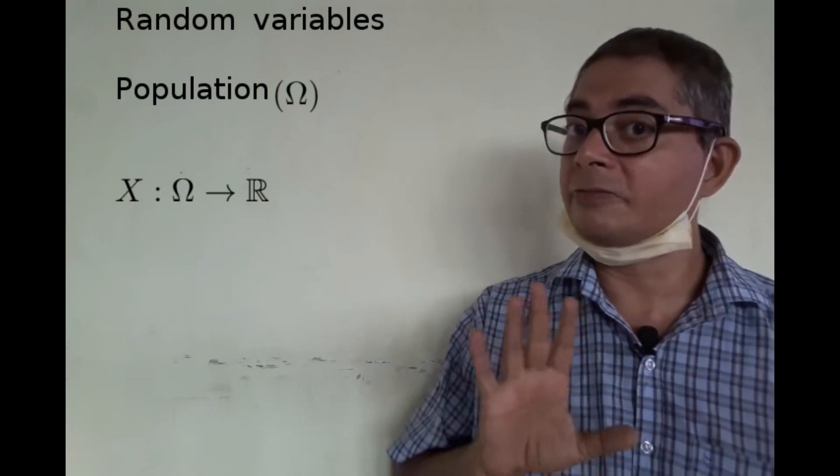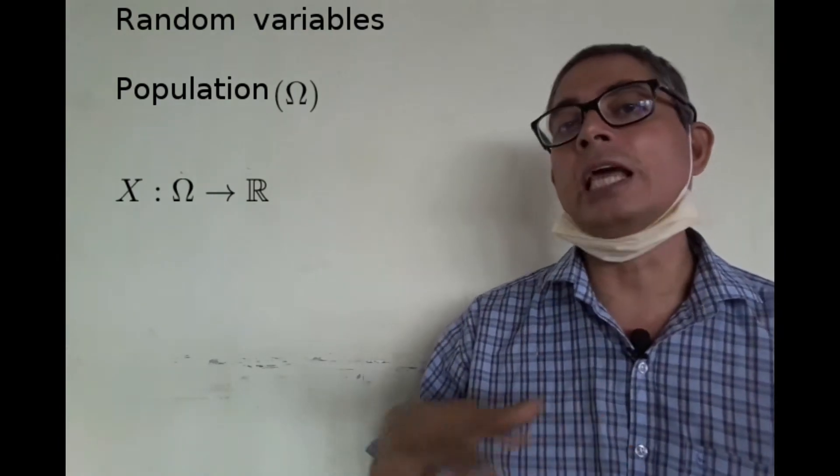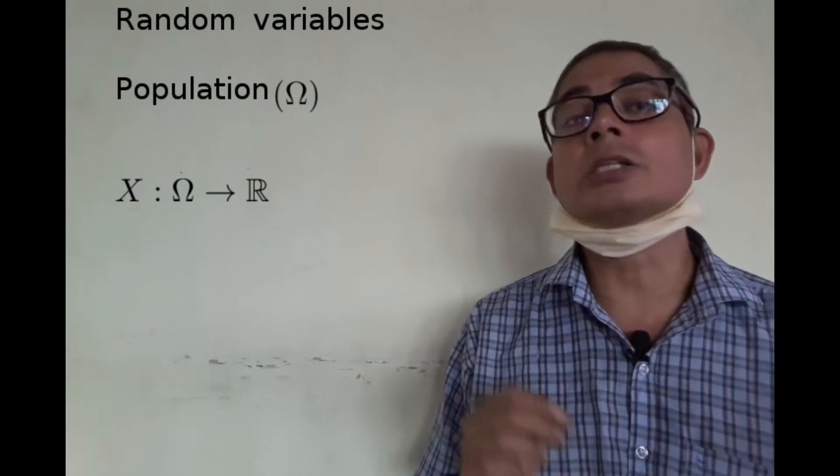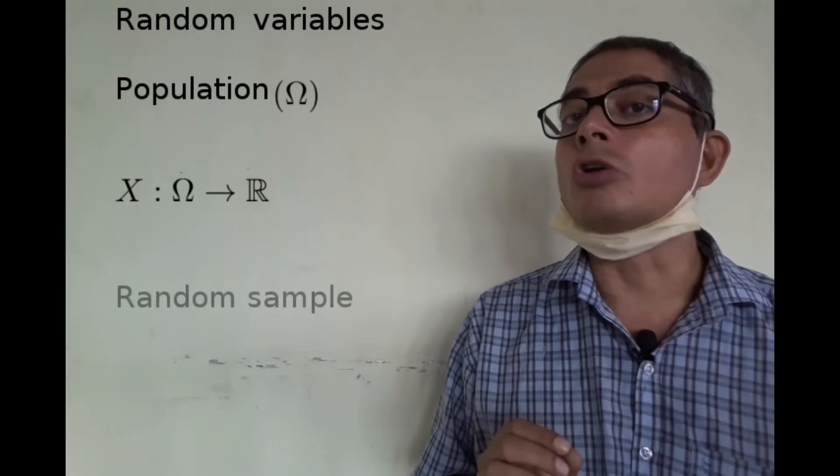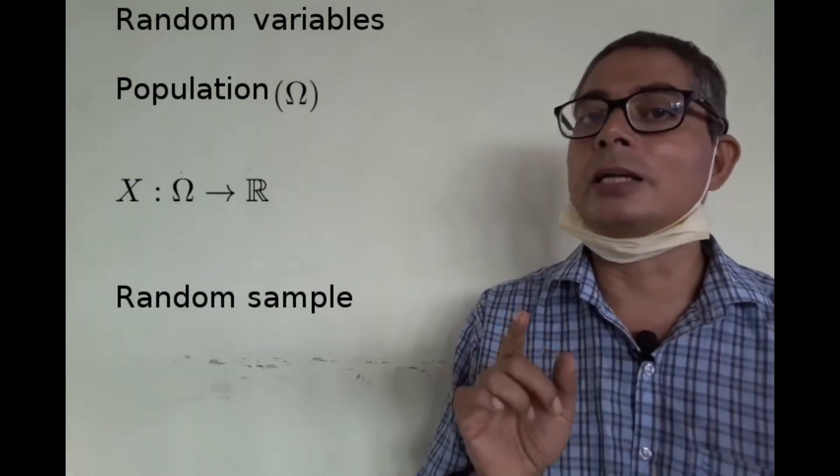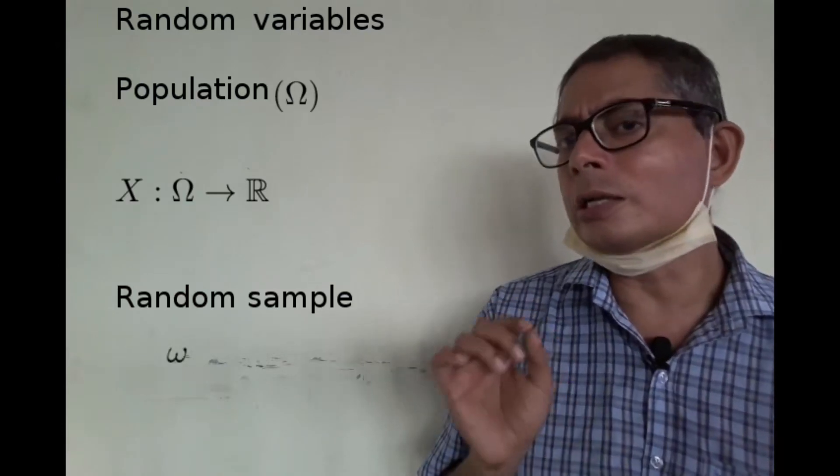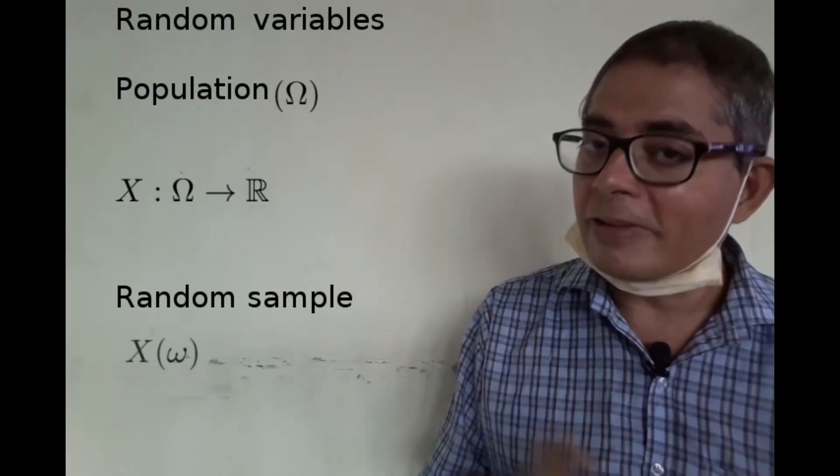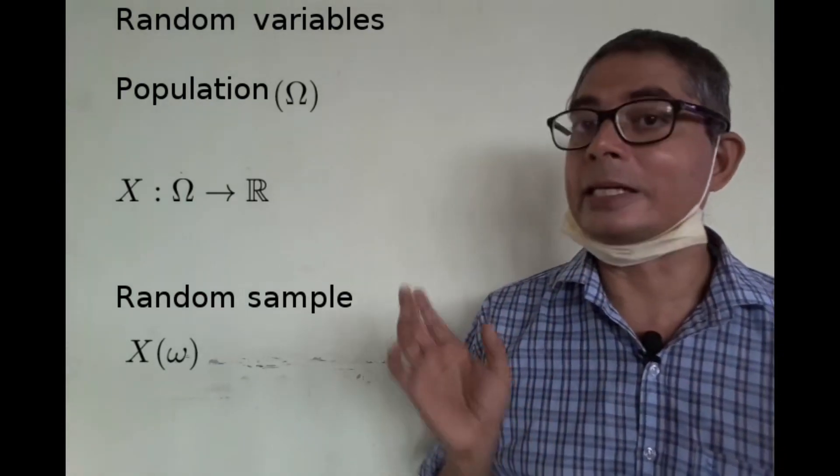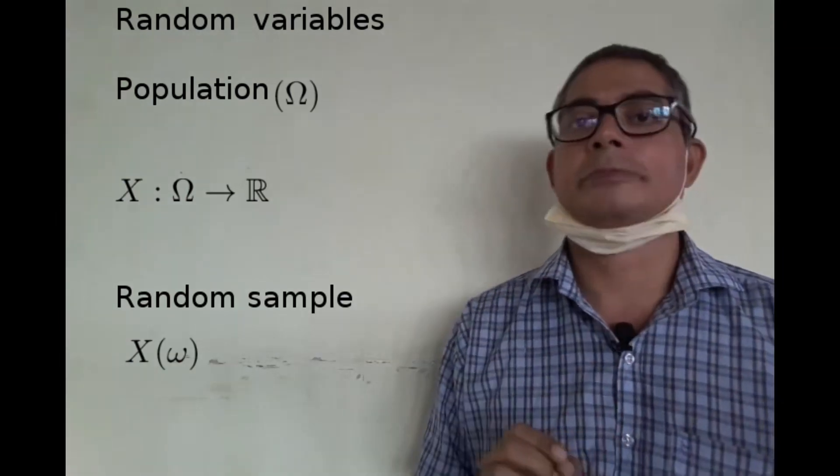There is no randomness in this function. Now we want to make inference about the behavior of the function over the entire population, which is too large to be enumerated completely. So we draw a random sample of individuals from it. This is where the randomness enters the picture. If a typical selected individual is called little omega (ω), then the corresponding variable value is x(ω). This is a random quantity because ω has been chosen randomly.